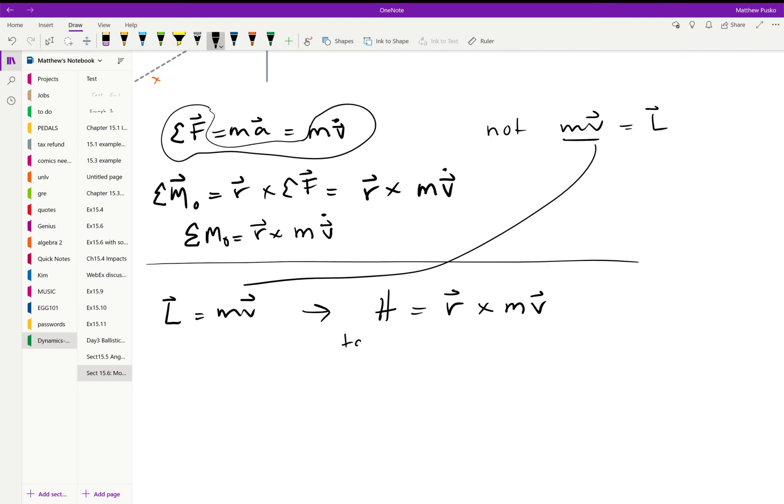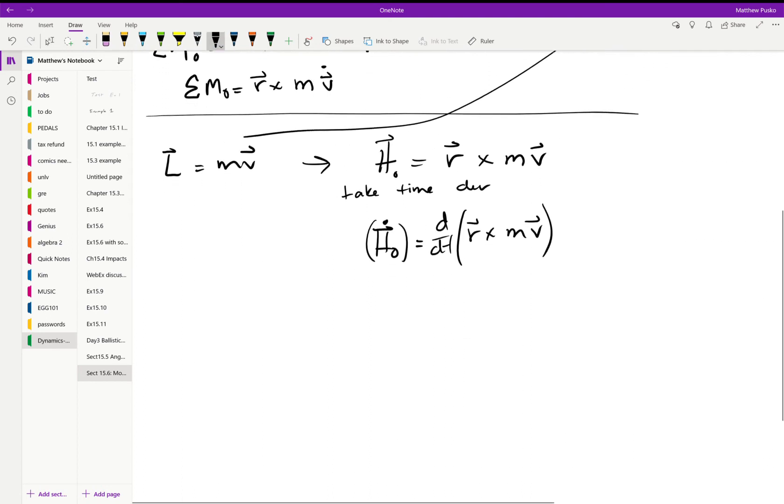Let's take the time derivative. I'm going to call this new thing Ḣ_o - it's a time rate of change of angular momentum about O. Let's take the time derivative of r crossed into the linear momentum. This is going to give me r-dot crossed mv plus r crossed mv̇.